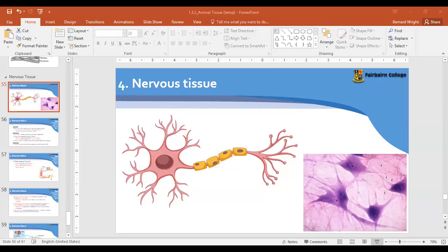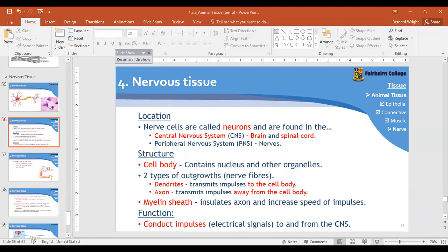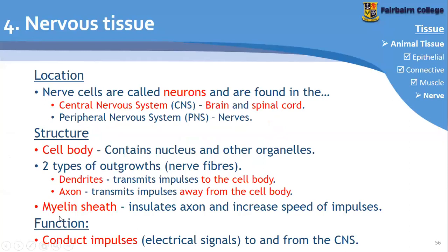So that's the dendrites and the axon. And then those yellow pieces — the yellow boxes that you saw — those were the myelin sheaths. They wrap around the axon to increase the speed of the impulses. The first three parts are the most important. The function of the whole neuron is to conduct impulses to and from the central nervous system.